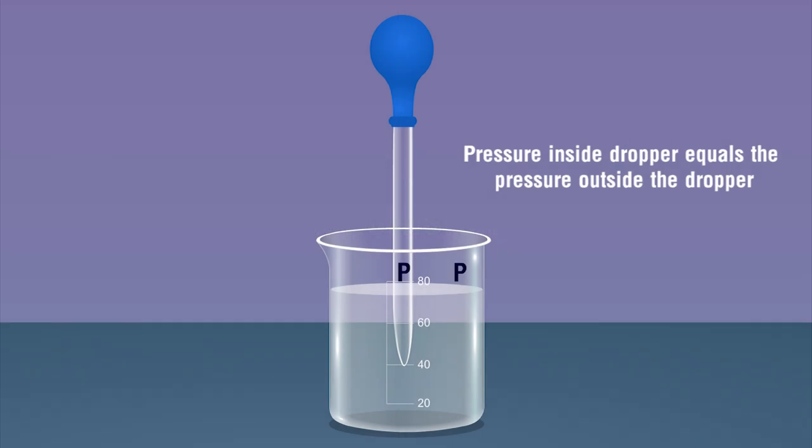Conclusion: Initially, the pressure inside the rubber dropper is the same as the pressure outside.